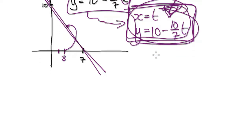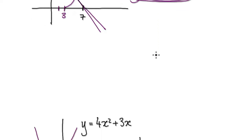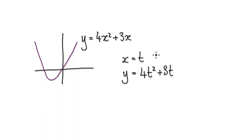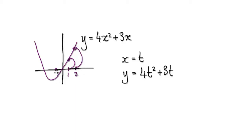Okay, here's another example. Let's say you've got this quadratic. When time equals one, you want to jump to here. Let's say when time equals two, you want to jump to here. When time equals negative one, you want to jump to here, and so on.